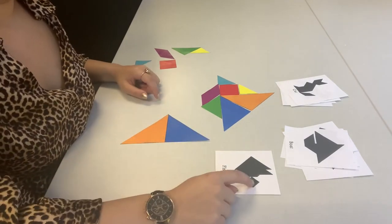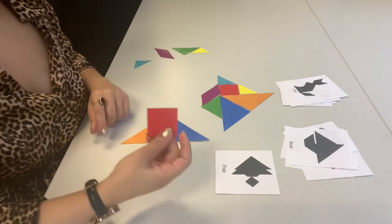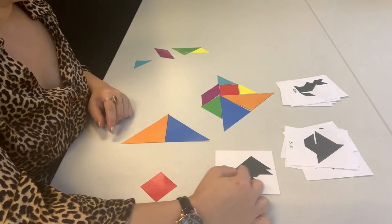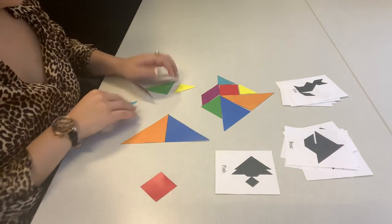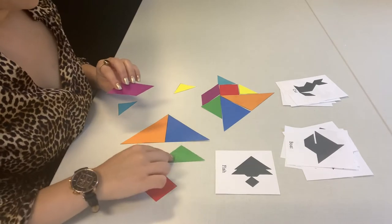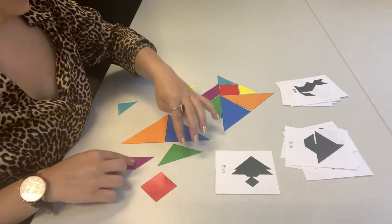I'm pretty sure this tail is the square. And the middle part will have to be the rest of these. I'm going to try the medium sized triangle and the parallelogram.